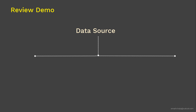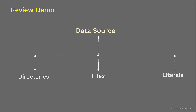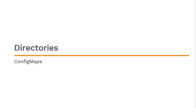Now it's time to move on to the review demo, where we'll create ConfigMaps using different data sources: directories, files, and literals. This section is divided into three parts accordingly. First, let's create the ConfigMap using data inside multiple files from a directory. In the next three slides, we'll download two config files into the directory, create the ConfigMap from those files, and finally validate that it is created as per our requirements.